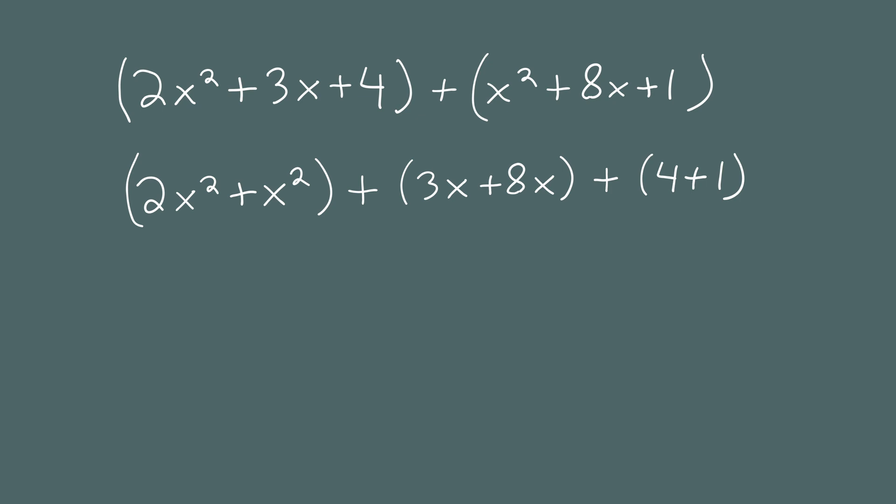Next, we combine the like terms. For this, simply add the coefficients, the numbers in front. This gives us 3x squared, 11x, and 5. So adding these two polynomials gives us 3x squared plus 11x plus 5.